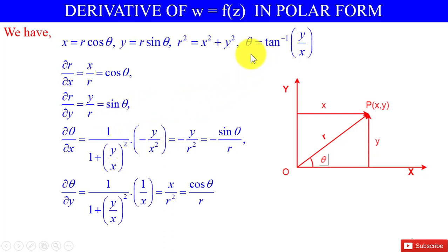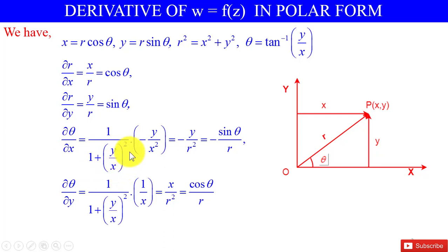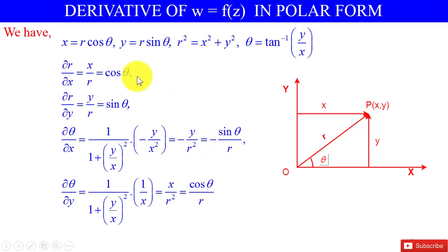If we differentiate θ = tan⁻¹(y/x) partially with respect to x, we have ∂θ/∂x = [1 / (1 + (y/x)²)] · (-y/x²) = -y/r² = -sinθ/r, because y = r sinθ and the r's cancel. So ∂θ/∂x = -sinθ/r.